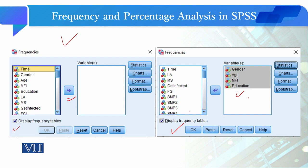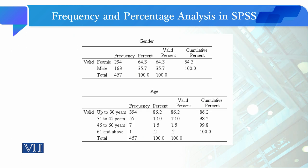آپ نے OK کے tab کو click کرنا ہے۔ جب OK کریں گے تو یہ tables variable wise بن کر آ جائیں گے۔ SPSS میں جب بھی frequency کا analysis کرتے ہیں تو frequency کے ساتھ percentage, valid percentage اور cumulative percentage بھی آتی ہے۔ جیسے gender کے variable میں female اور male کی frequency اور percentage بتائی گئی ہے۔